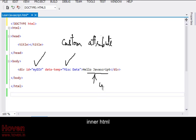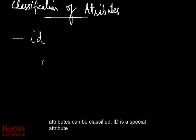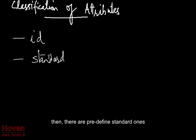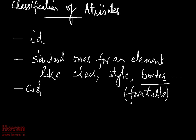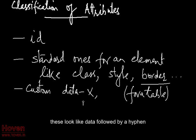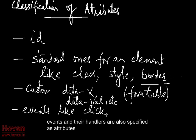Attributes can be classified. ID is a special attribute. Then, there are predefined standard ones. There could be custom attributes. These look like data followed by a hyphen. Events and their handlers are also specified as attributes.